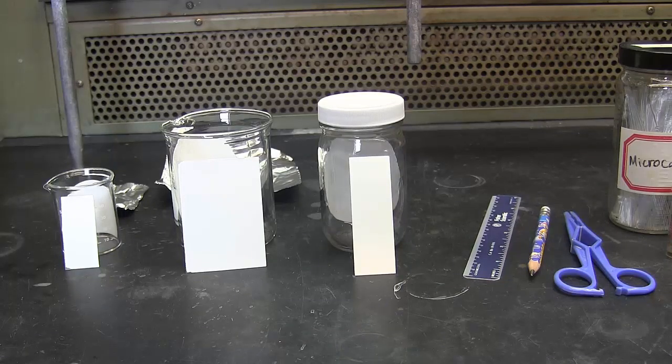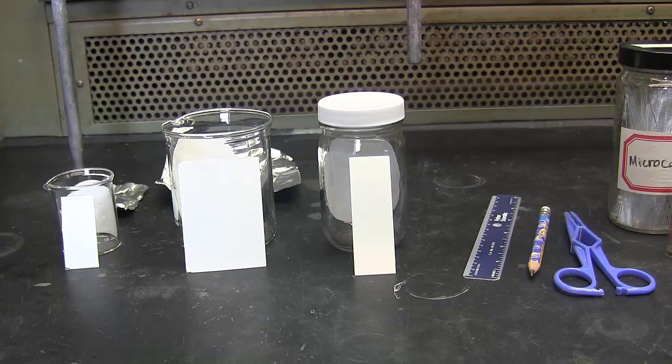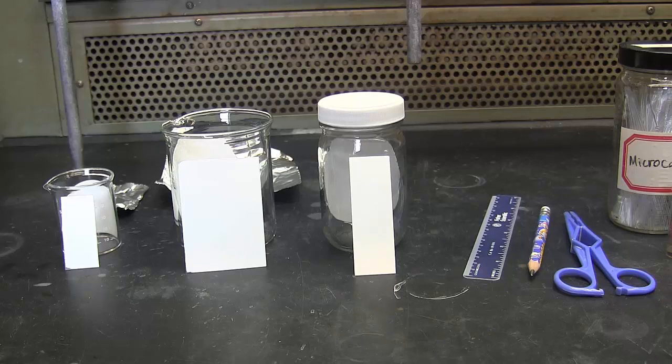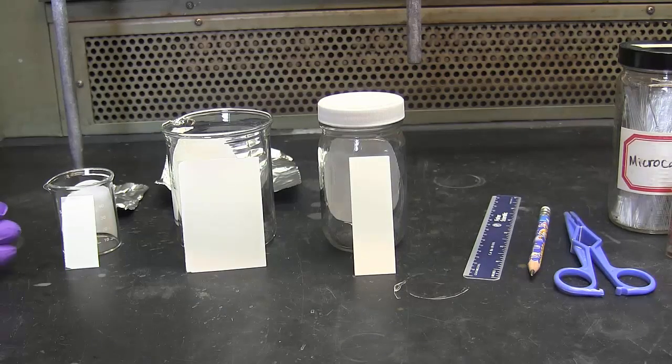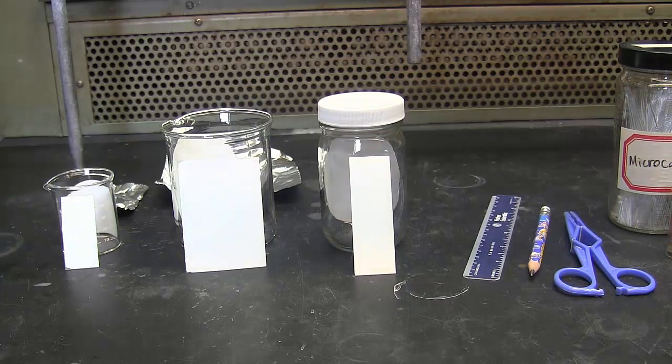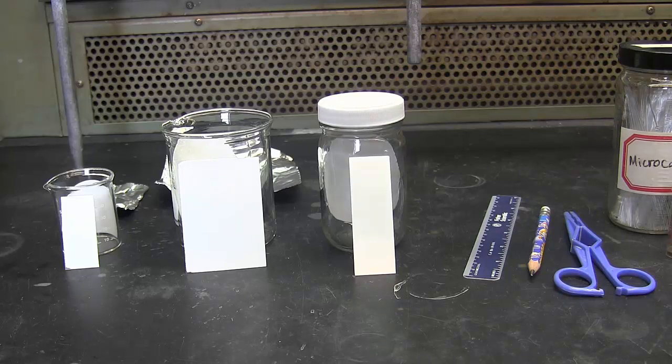You'll need to pick a developing chamber that matches the size of the TLC plate you're going to develop. On the far left, you'll see that I have a 50 milliliter beaker and a very small TLC plate. That would be appropriate for monitoring fractions coming off a column.